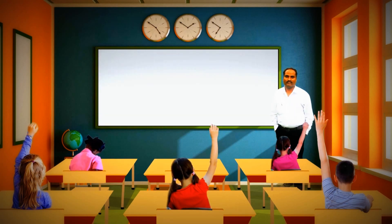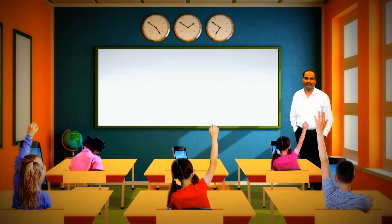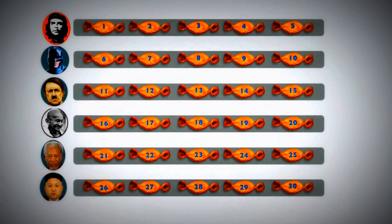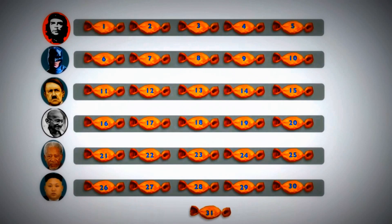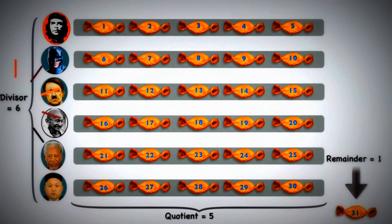Well, normally a teacher would take examples of things that are measurable and divided among human beings. 30 chocolates divided among 6 children — each gets 5. What if there are 31 chocolates? Still, each gets 5 and 1 remains. And that's called remainder, whereas 5 is quotient and 6 is divisor.